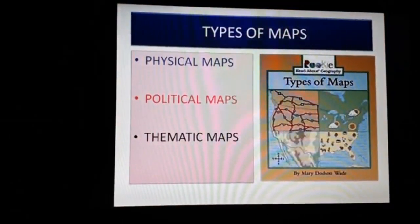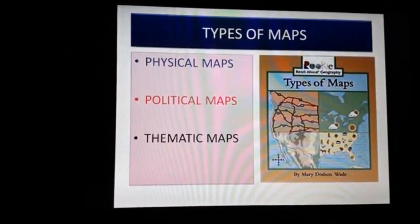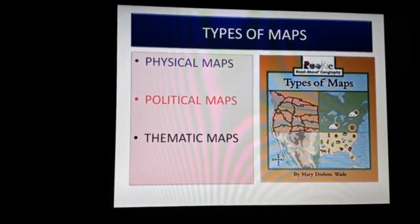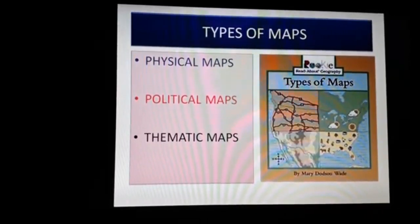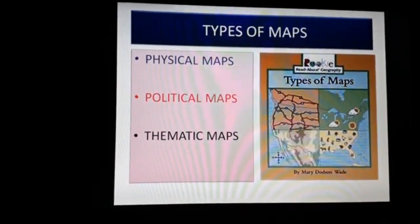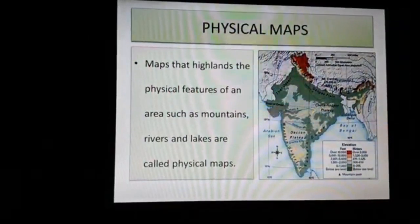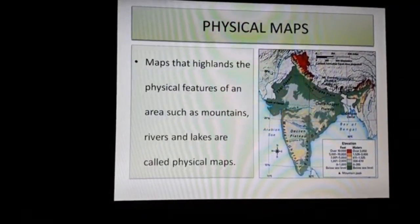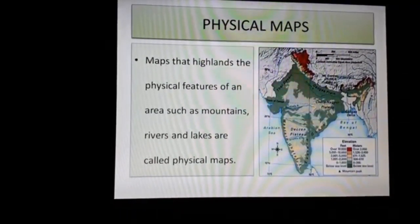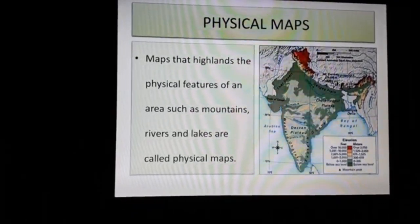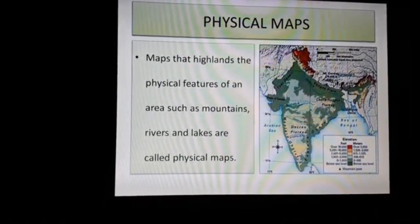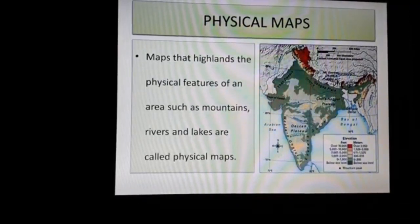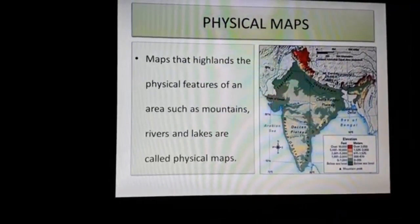Let us learn about types of maps. Maps are of several types, mainly classified into physical maps, political maps, and thematic maps. Physical maps show the natural features of the earth, such as mountains, plateaus, rivers, lakes, and oceans. Different colors are used to show different features.